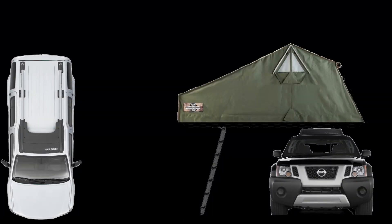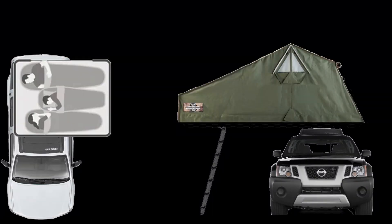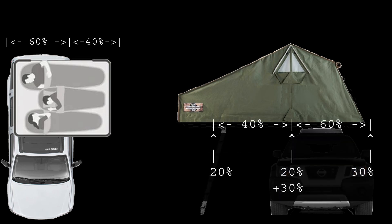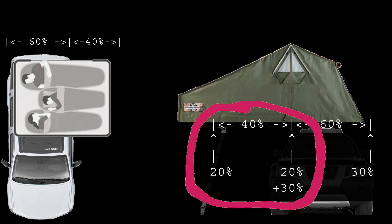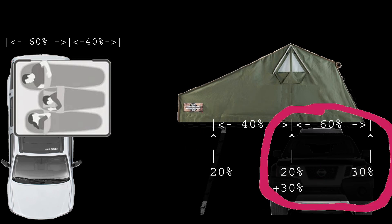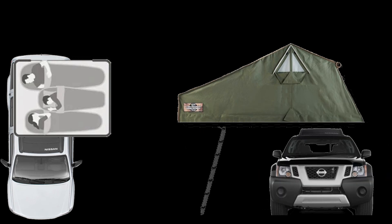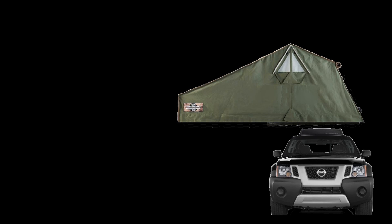Now what happens when we add people and dogs to the mix? The ladder carries some of the weight, but only about 20%. As you can see here, the rest of the weight rests on the roof. Since the tent folds in half, think of the two halves independently, then add up their impacts on the roof. The tent is never deployed while moving.